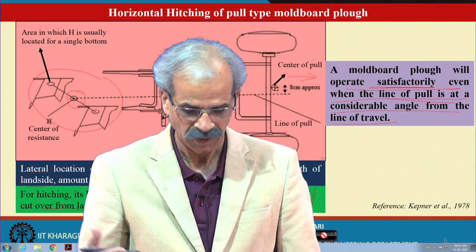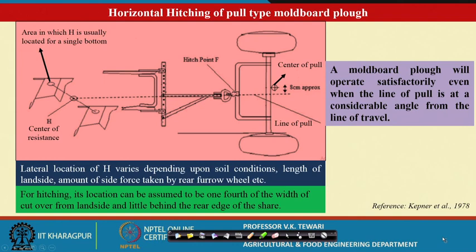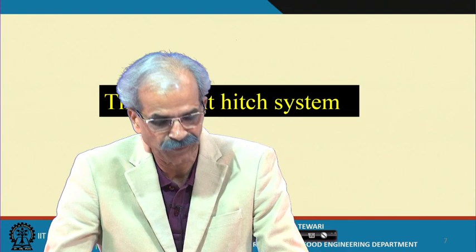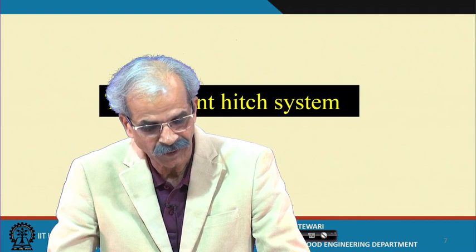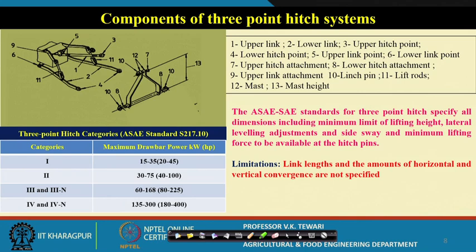Let us go forward and look at the 3-point hitch, which is the drawbar most commonly used. In fact, it is supposed to be the least effective as far as power is concerned, yet most problems and design work involve the 3-point hitch. When we want to understand 3-point hitching, we must know the details of the components of such a hitching system.